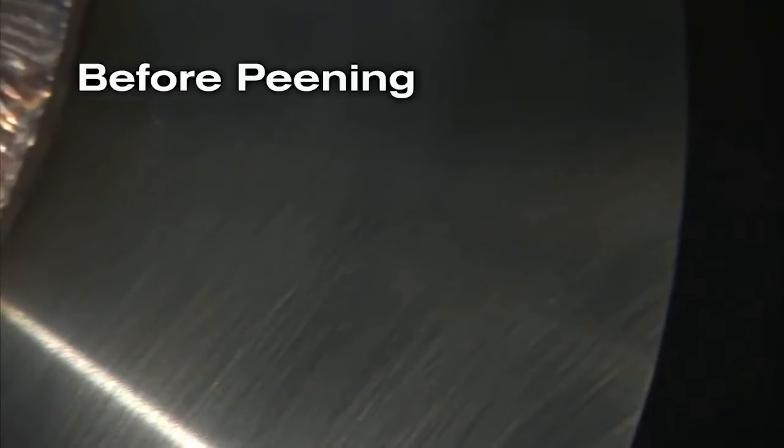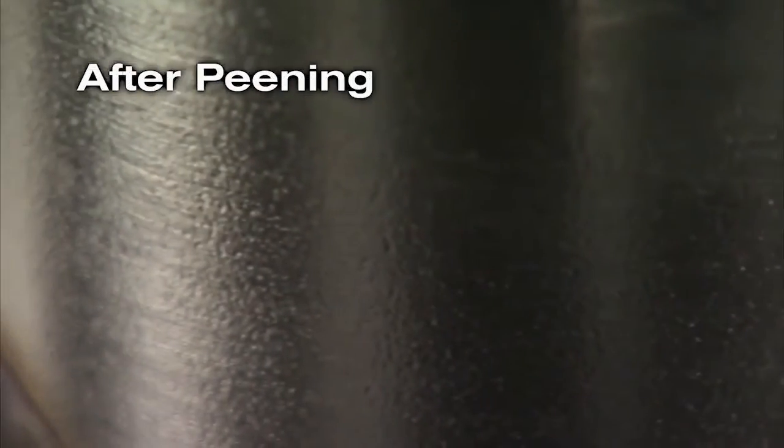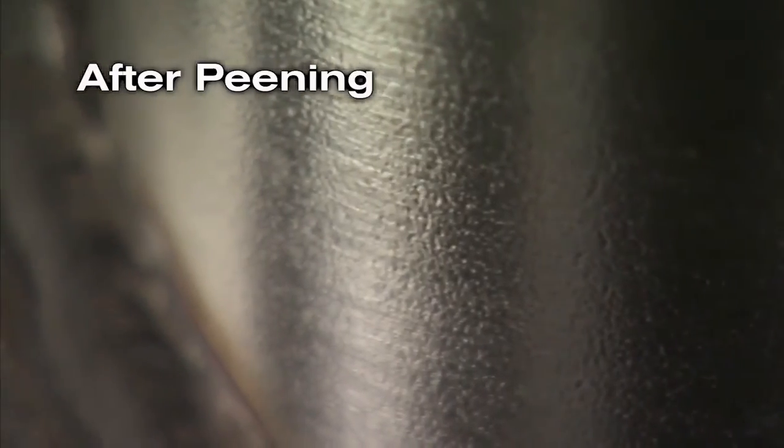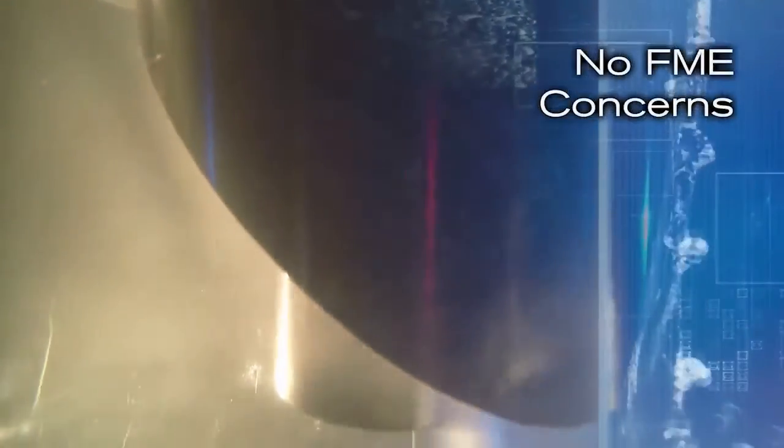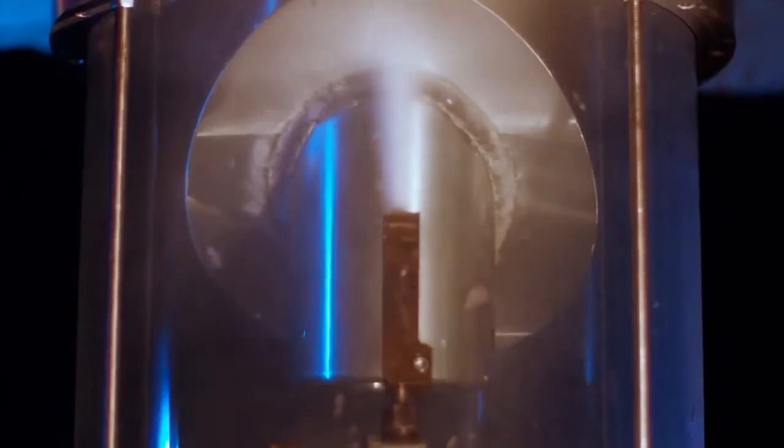Cavitation peening technology is proven and has been safely used for nuclear power plants in Japan. Since no material is being removed, there's minimal risk to system components. The process uses water and absolutely no debris is produced. The process is available in the U.S. for use on reactor vessel head nozzles, reactor vessel nozzles, and bottom mounted nozzles.